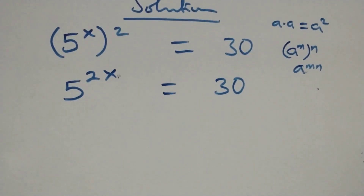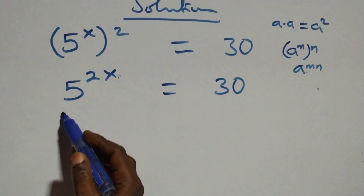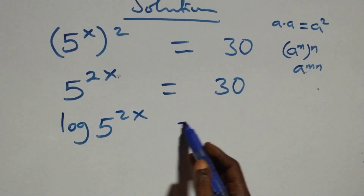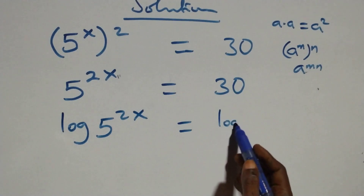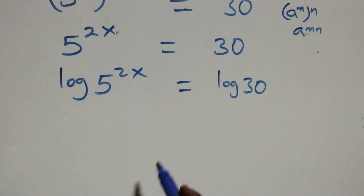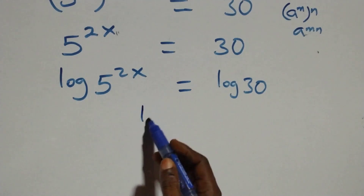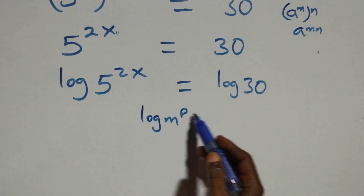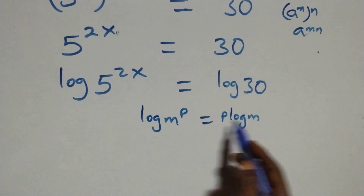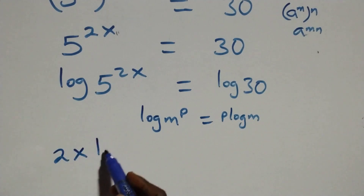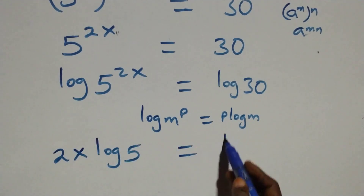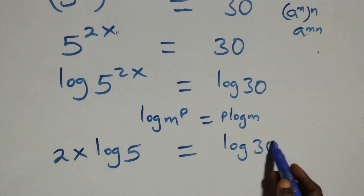Then here we apply log on both sides. We have log of 5 raised to power 2x equals to log 30. We apply the power rule of logarithms: log of n raised to power p is the same as p times log n. So we have 2x times log 5 equals to log 30.